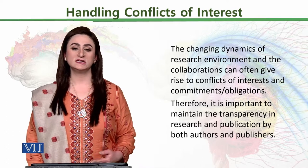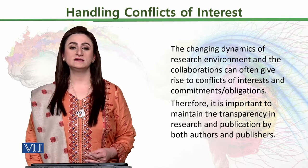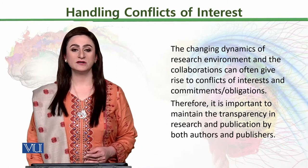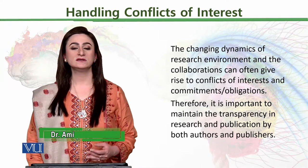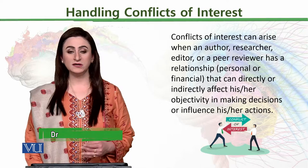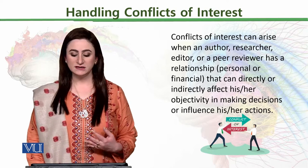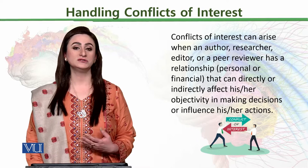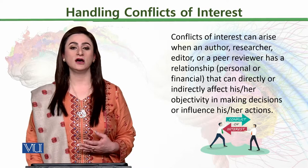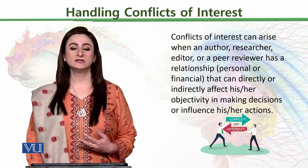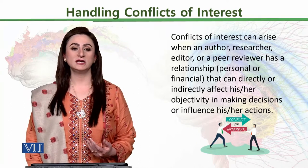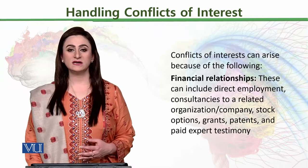This is the general policy when you submit a research paper — you have to declare either there is a conflict of interest or there is not. Conflict of interest can arise when an author, researcher, editor, or a peer reviewer has a relationship, personal or financial, that can directly or indirectly affect his or her objectivity in making decisions or influence their actions.